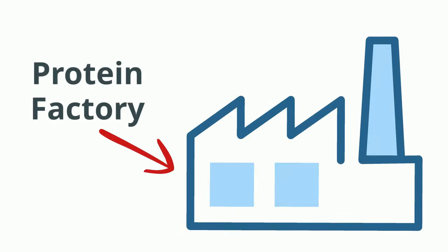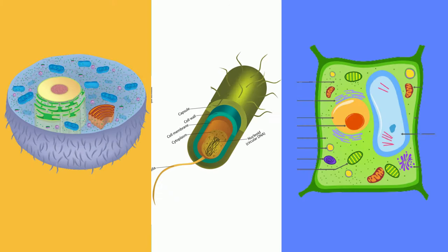Ribosomes are small protein factories found in cells. Ribosomes are found in plant, animal, and bacteria cells. The average eukaryotic cell has approximately 10 million ribosomes.